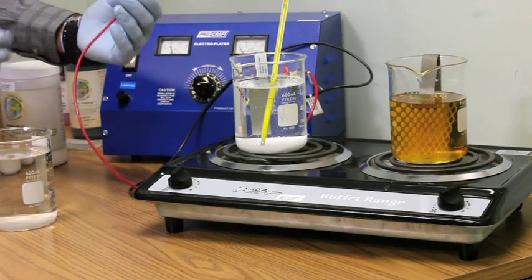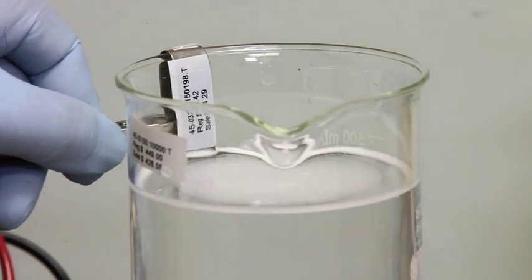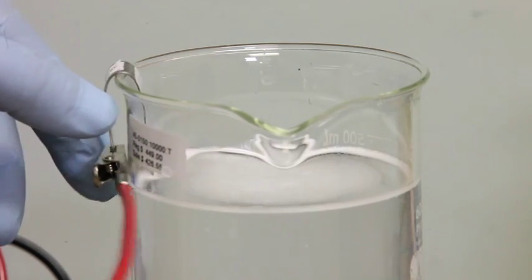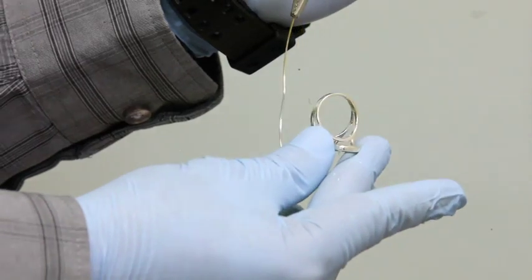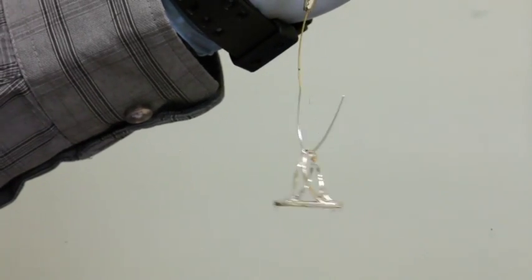Place the positive lead of the rectifier on the stainless steel anode and the negative lead to a hook gold wire. Suspend the jewelry piece from this gold wire.